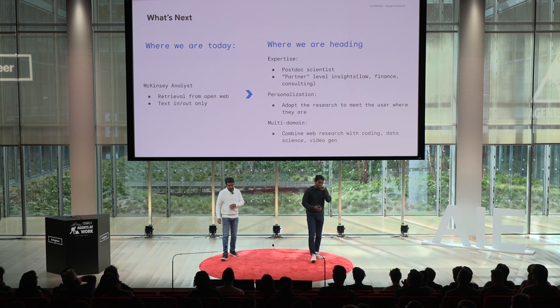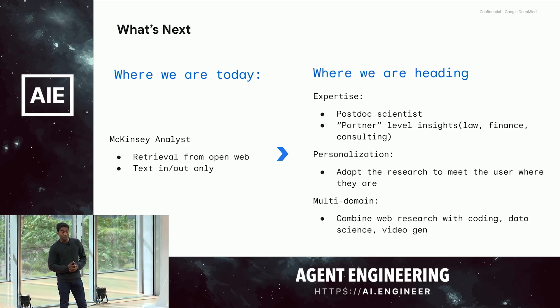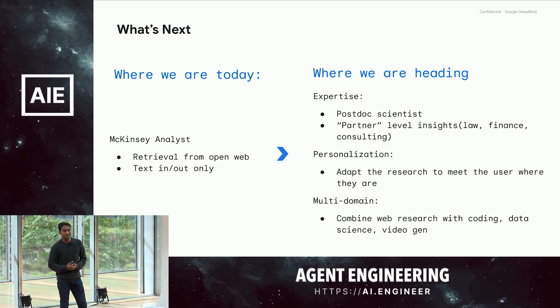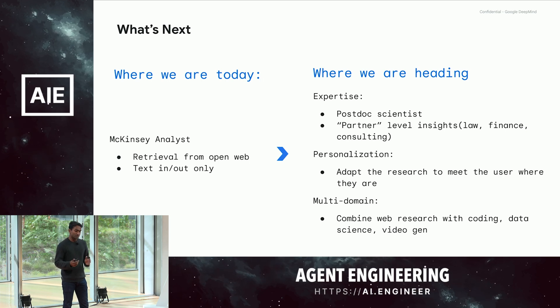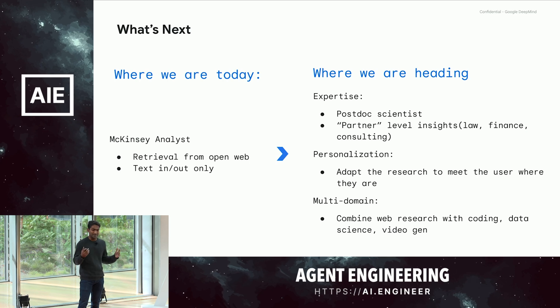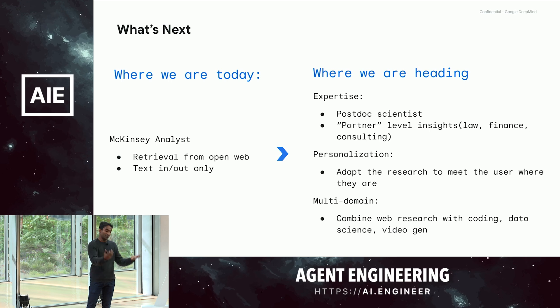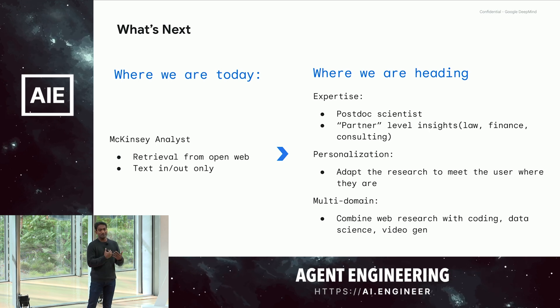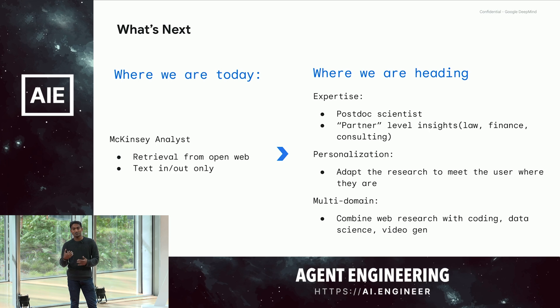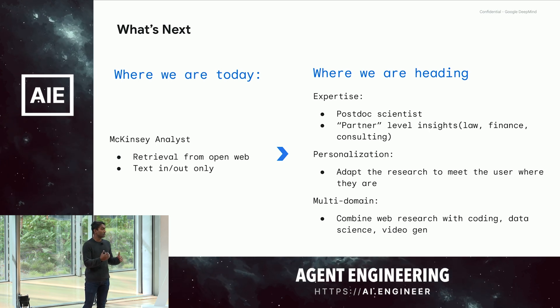We were super excited to put this feature out in December. We weren't actually sure if anyone was going to care to wait five minutes for something, and we were really positively surprised by the reception. What we saw was we've built something that's maybe as good as a McKinsey analyst, and we give it away for 20 bucks. But it just retrieves from the open web and it's a text-in text-out only system. So there are a few different directions of where research agents are going to go next.